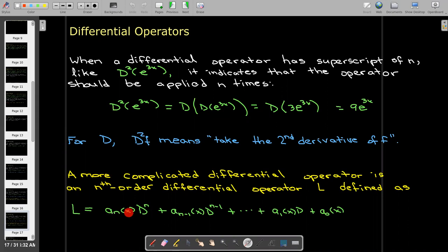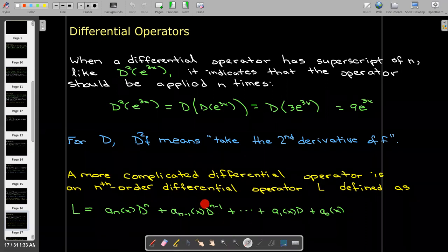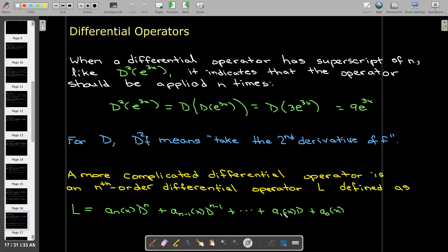And then you would take the n minus 1 derivative of f and multiply it times this function. And so on until you get down to the first derivative multiplied times a1 of x. And then just some coefficient a sub 0 of x, which would be multiplied by the function without any derivatives. So you can think of this L as just being a shorthand for writing out that entire statement.